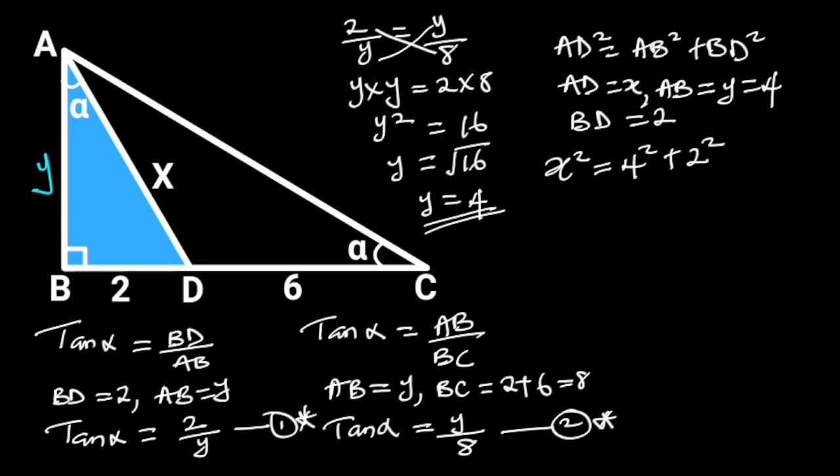4 squared is equal to 16, and 2 squared is equal to 4. 16 plus 4 is equal to 20. So X squared is equal to 20. Taking the square root of both sides will give us X is equal to 2 root 5.